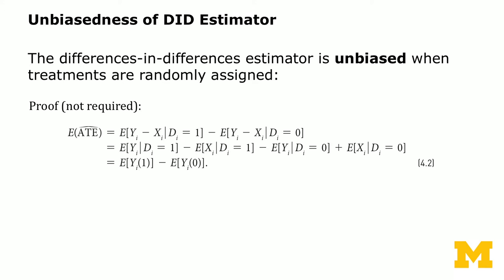The first thing we're going to prove — which is not required — is to show that it's an unbiased estimator when treatments are randomly assigned. Recall that in the first lecture we talked about the unbiasedness of the difference in means estimator. We're going to evaluate the difference-in-differences estimator and show that it's just as good in terms of unbiasedness.